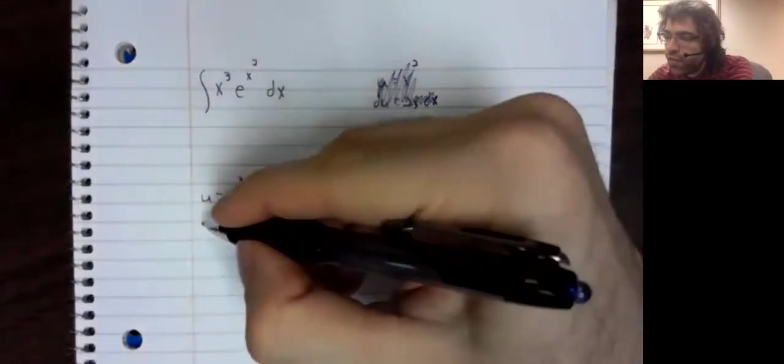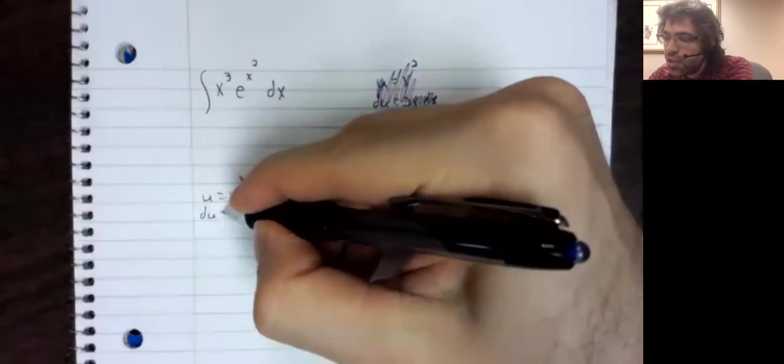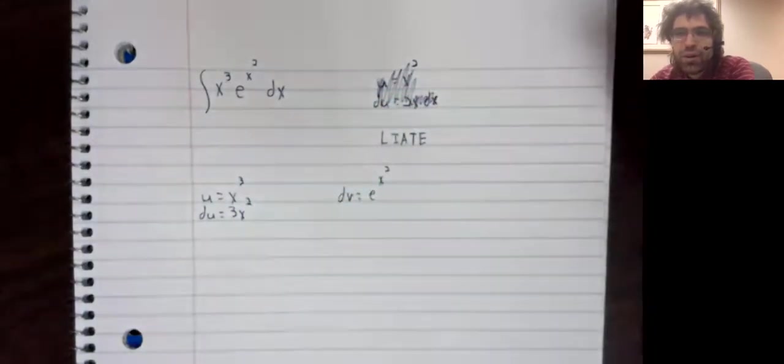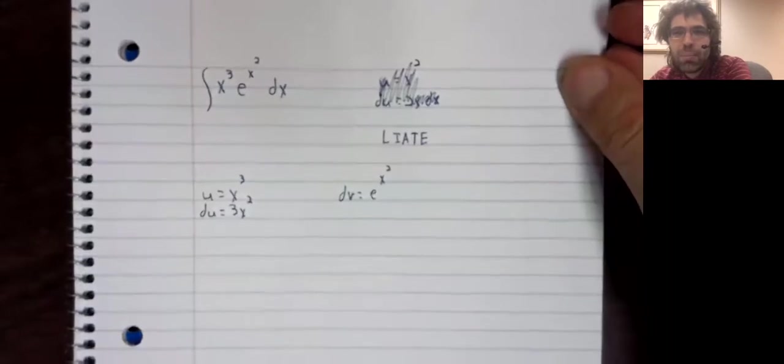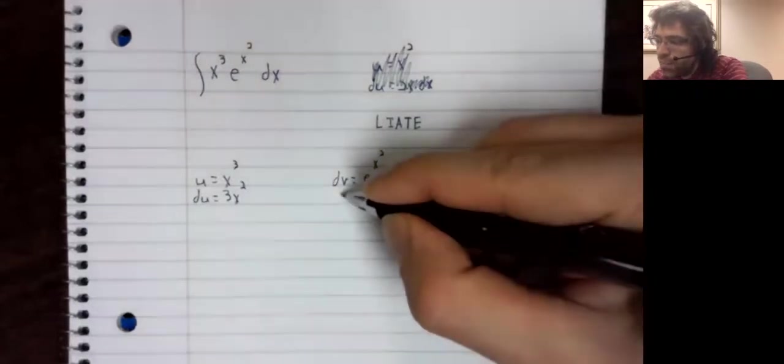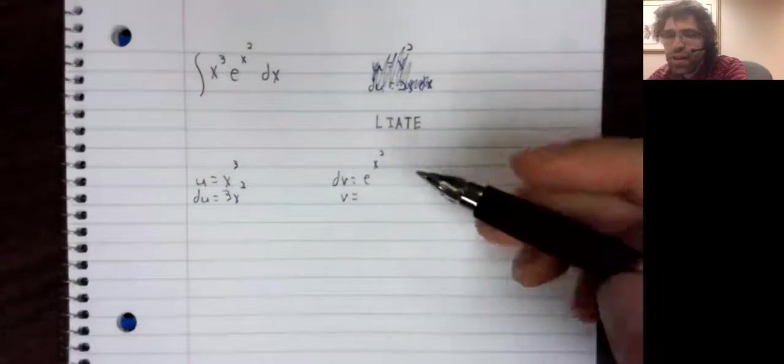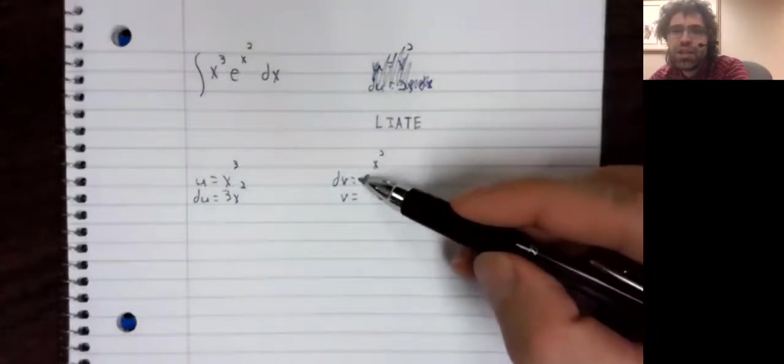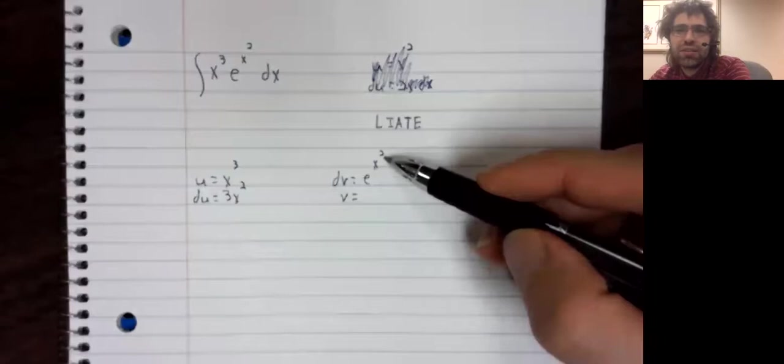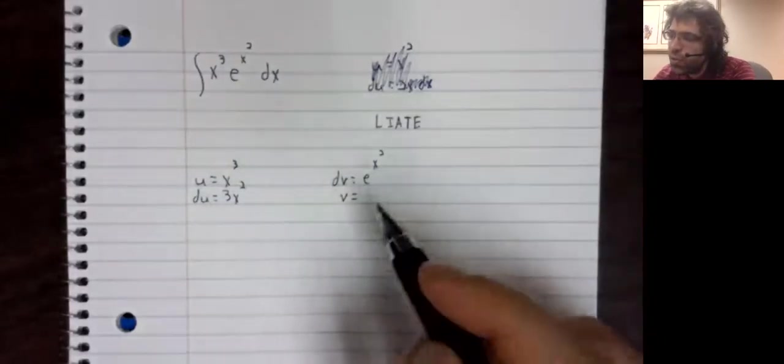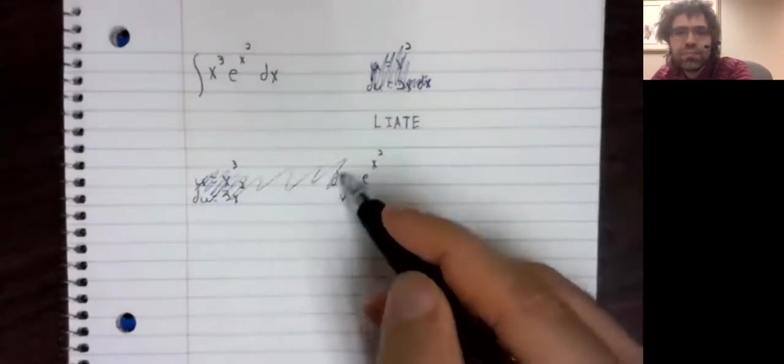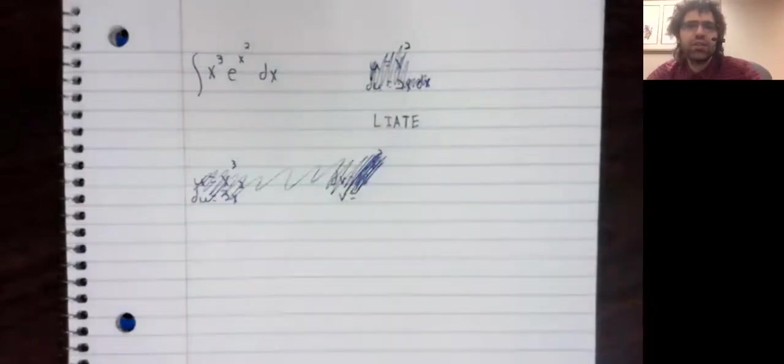Well, if we do that, we run into instant failure. You see why I've called LIATE a rule of thumb rather than an absolute law. To find v, we need to be able to integrate this thing. And we cannot integrate this. I mean, give it a try. You will not succeed. So that didn't work.